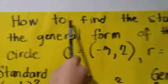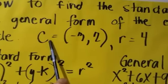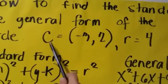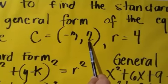My example is how to find the standard form and the general form of the equation of a circle. Our C, which is our center, is equal to negative 3 and positive 2, and our R, which is the radius, is equal to positive 4.